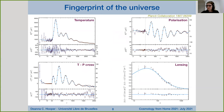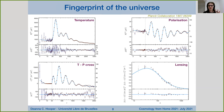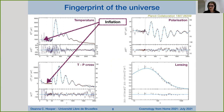Different regions of these maps give us different physical information. Information about inflation — this epoch of exponential expansion — is contained in the lower multipoles, around multipole 10. The Lambda CDM basics come from the main acoustic oscillations and acoustic peaks, which describe the interplay between the photon-baryon fluid. Here we can extract information about dark matter and the matter content of the universe. At very high multipoles heading to the tail end of the spectrum, we can constrain the relative abundance of primordial elements.